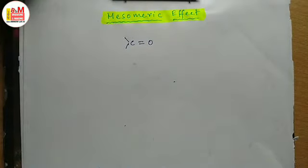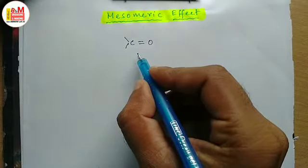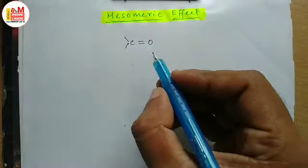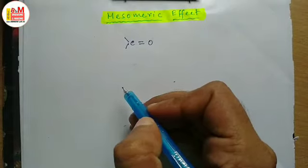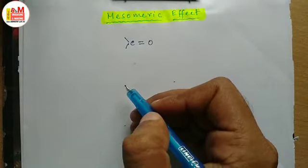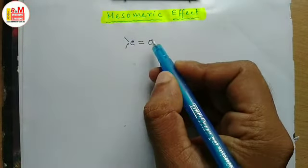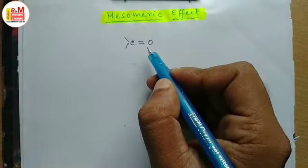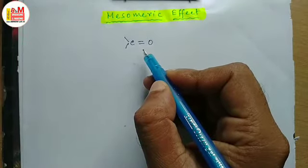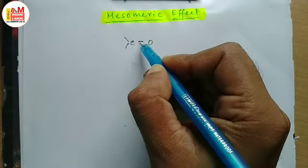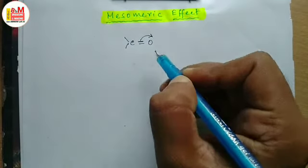Let us consider a carbonyl group C double bond O. We know that oxygen is more electronegative than carbon, so naturally oxygen will try to drag the electron density from this carbon. We discussed this before in our inductive effect video, but there we dealt with the sigma electrons. This electronegative oxygen atom will drag the electron density from the sigma bond as well as from the pi bond — say this is the pi bond here. This electron density of this pi bond will be dragged towards this electronegative oxygen atom.